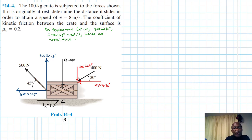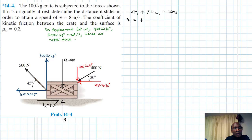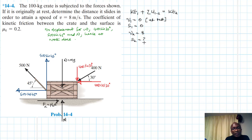The initial kinetic energy KE1 plus the total work from point 1 to point 2 equals the final kinetic energy KE2. KE1 is equal to zero because the crate is initially at rest, and s1 is also zero. v2 equals 8 m/s, and s2 is what we are looking for.